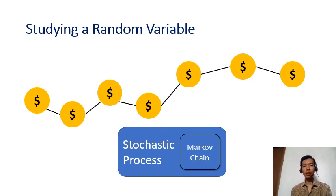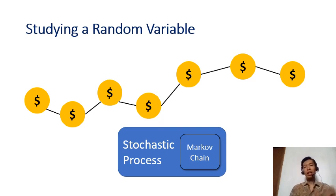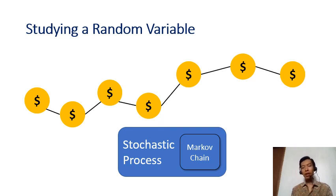When you try to study or model the relation between the value of a random variable from one time to another time, it is called a stochastic process. Markov chain is an even smaller part of that study, which we will see later. Let's start with defining the stochastic process first.